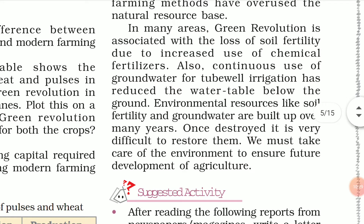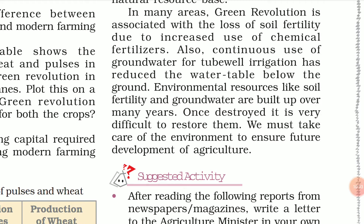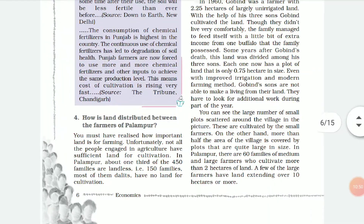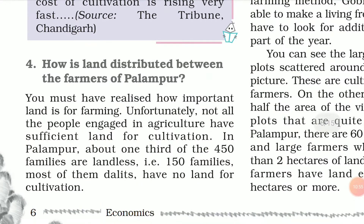Environmental resources like soil fertility and groundwater are built over many years. Once destroyed, it is very difficult to restore them. You must take care of the environment to ensure future development of agriculture. Unlike man-made resources that can be produced in factories according to demand, natural resources cannot be created — nature takes its own time to regenerate.